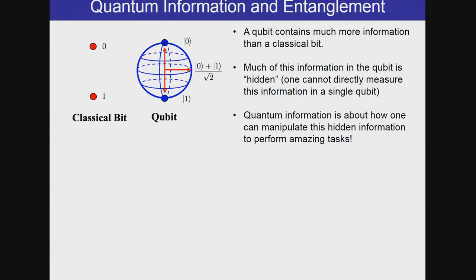And how do they do this? Here on the left, you see the classical bit of 0 or 1. And the qubit, which is a quantum bit, is a superposition of two states, 0 and 1. So you can see that the qubit has a lot more information than the classical bit. But a lot of this information is hidden in the sense that you can't measure directly what the coefficients of 0 and 1 are. Once you measure it, the state is destroyed.